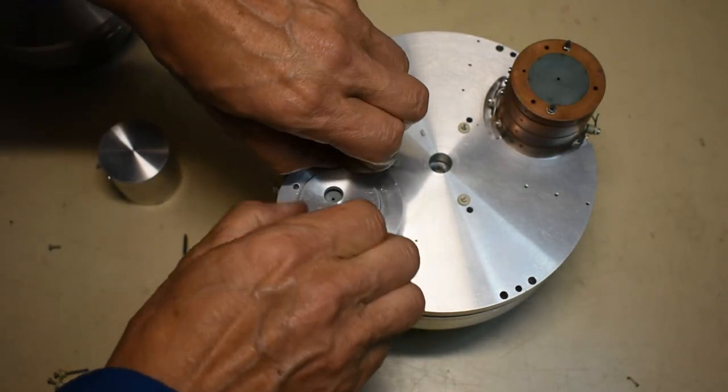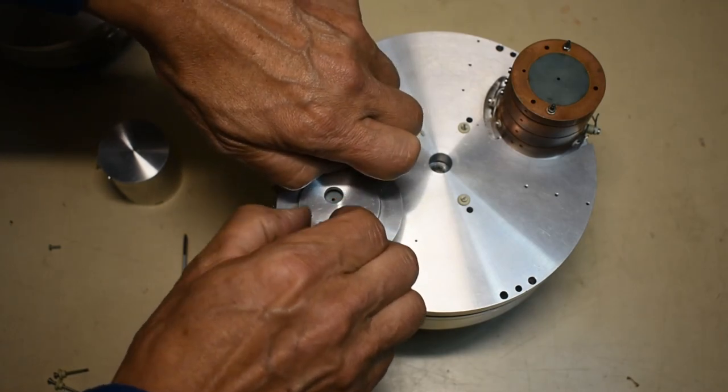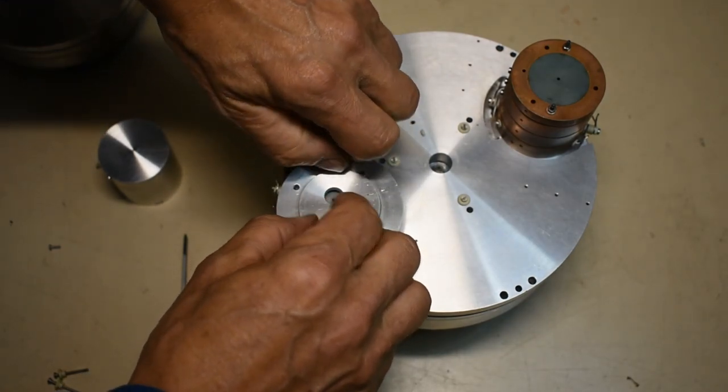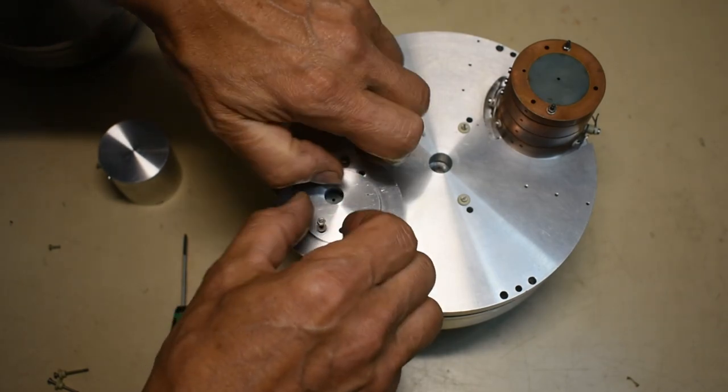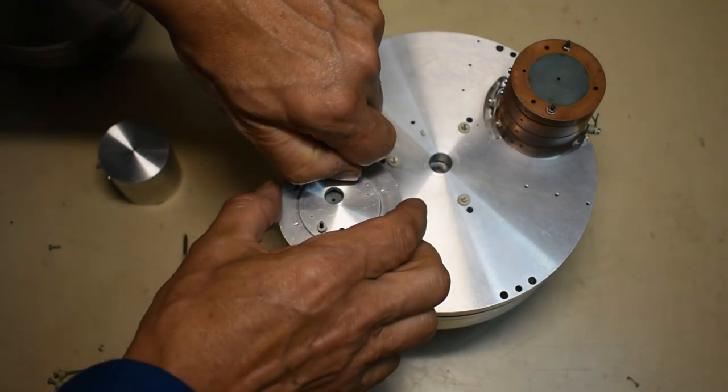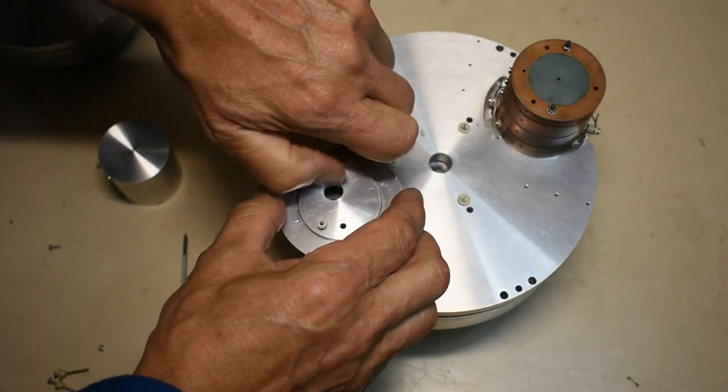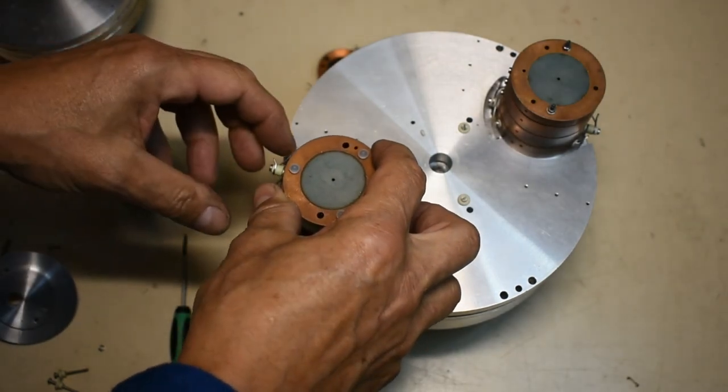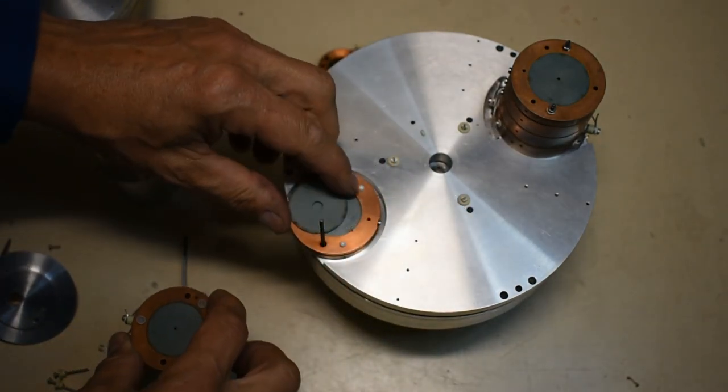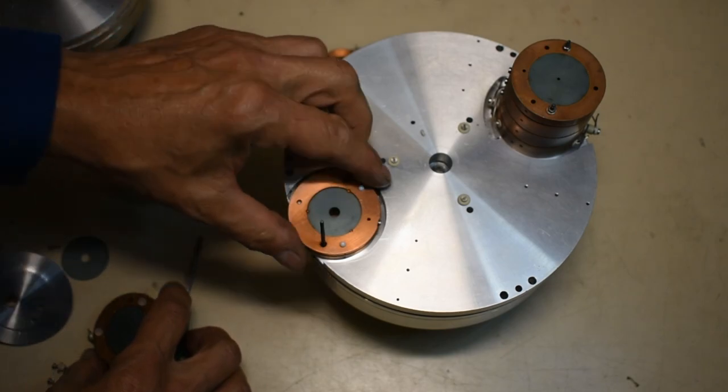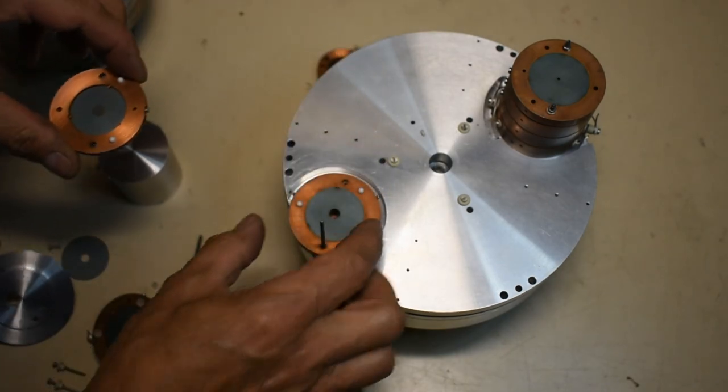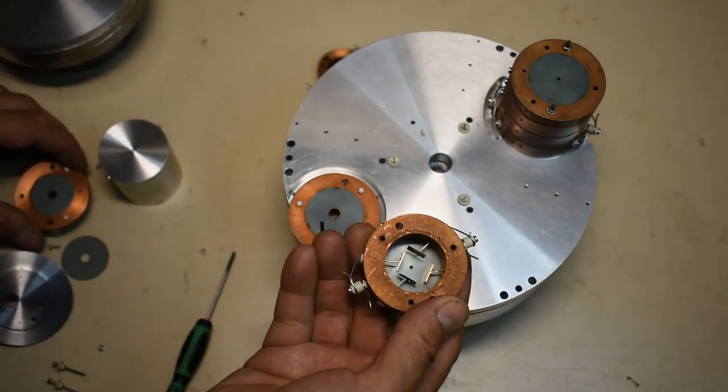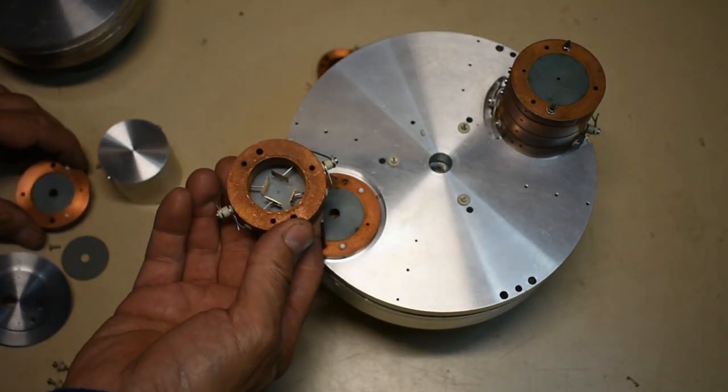And then again this is still more electrostatic lensing inside here too. And there's also deflection plates on this side as well.